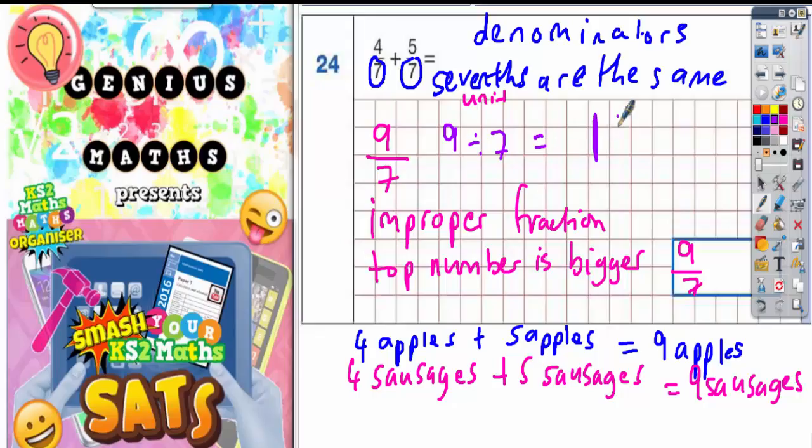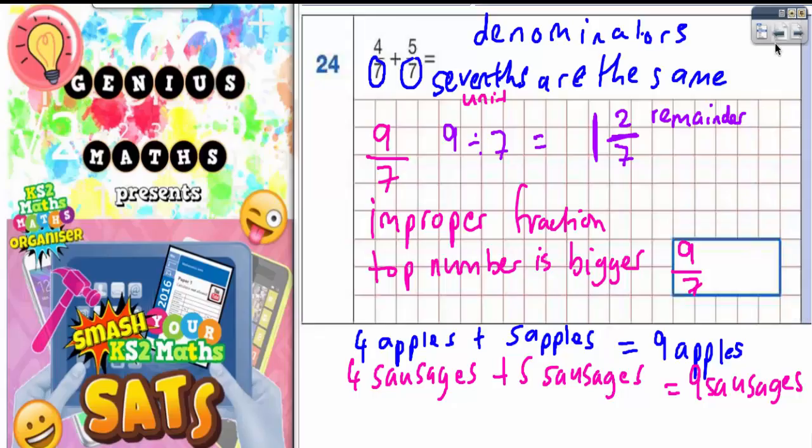But this remainder of two, you turn it into a fraction, and that's the easy bit. Because once you're dealing with sevenths, you're still dealing with sevenths in the answer. So nine divided by seven is one remained two sevenths because we're dealing with seven.